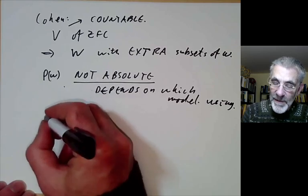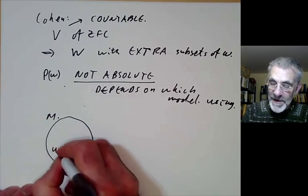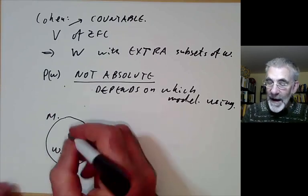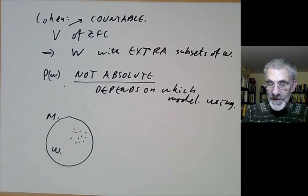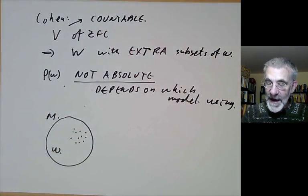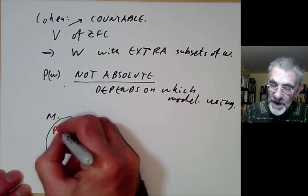So we can sort of think of it like this. Suppose you've got some model M of Zermelo-Fraenkel set theory. In M there might be a set omega and M might know about some subsets of omega and you take all the subsets of omega that are in this model M and M thinks this is the power set of omega.